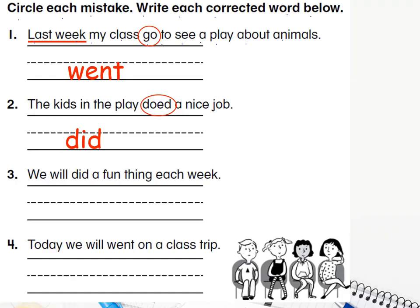Number three: 'We will did a fun thing each week.' The word 'will' means something is going to happen — this is future tense. That's a bit tricky! The mistake here is using the verb 'did.' We can't say 'we will did.' Instead we have to say 'we will do a fun thing each week.'